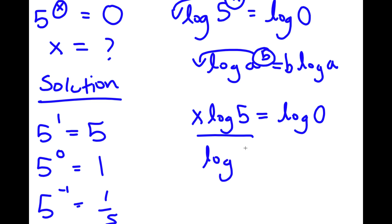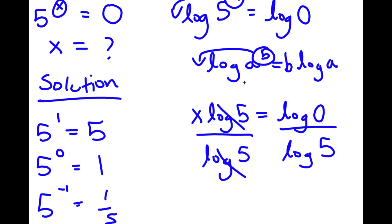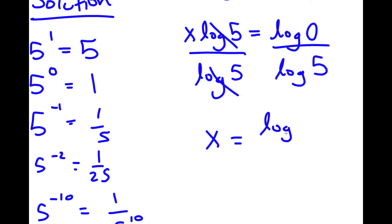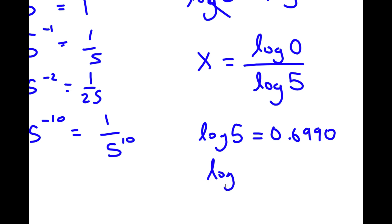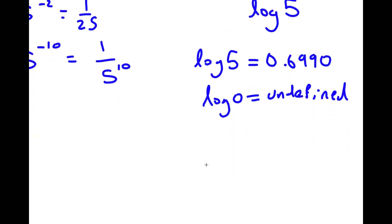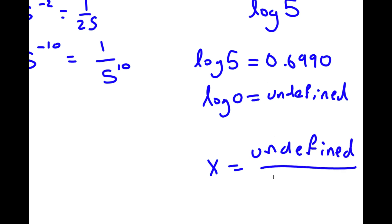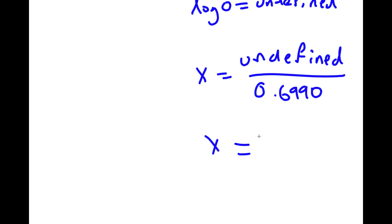If I divide both sides by log 5, those cancel out, giving x equals log 0 over log 5. Now, log 5 equals approximately 0.6990, but log 0 is undefined. So x equals undefined over 0.6990, and undefined divided by any number is still undefined. Therefore, the value of x is undefined.